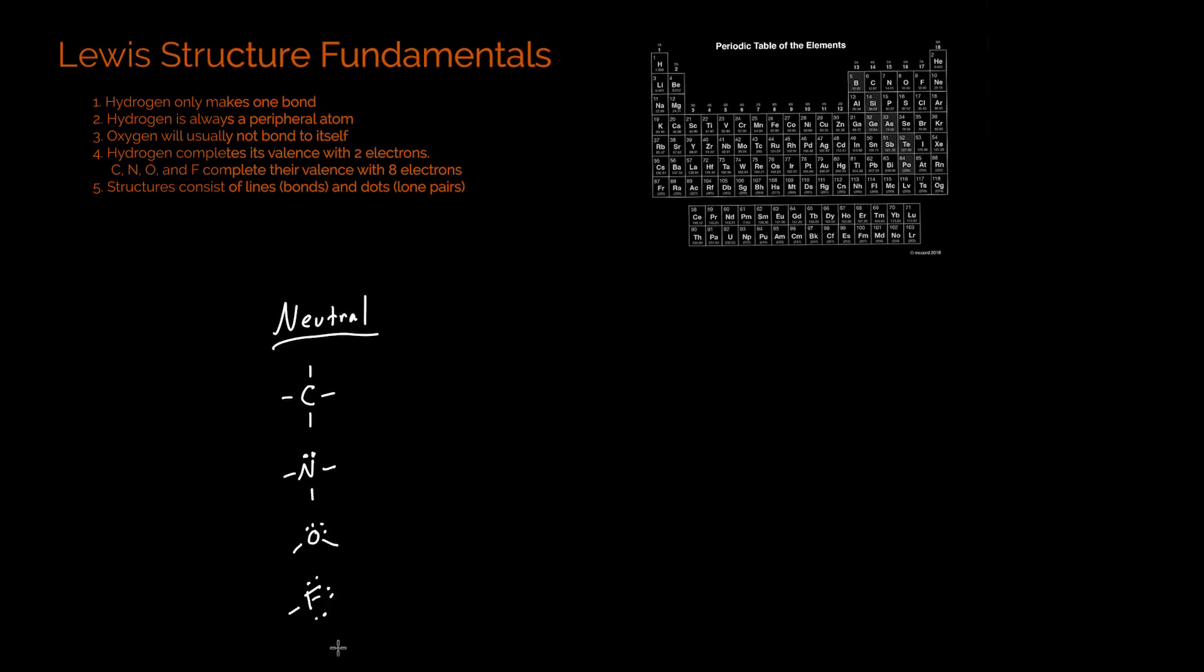If you want to understand what's really happening here, what we're saying is that carbon, if you found it on the periodic table, which is right up here, it's going to have four valence electrons. And what we said in rule four up above is that carbon wants to fill its valence shell with eight electrons. And so what it's going to need is basically four electrons from other species. And what that turns into is simply four bonds around carbon.